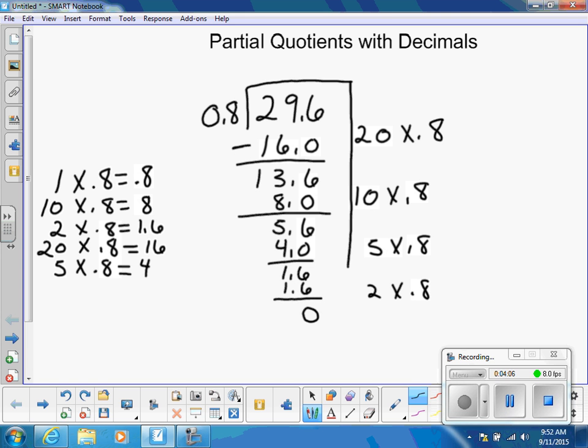Now we have used all of our dividend. We have used all of our 29 and 6 tenths. And now we need to answer the question, how many groups of 8 tenths were we able to find in our 29 and 6 tenths?